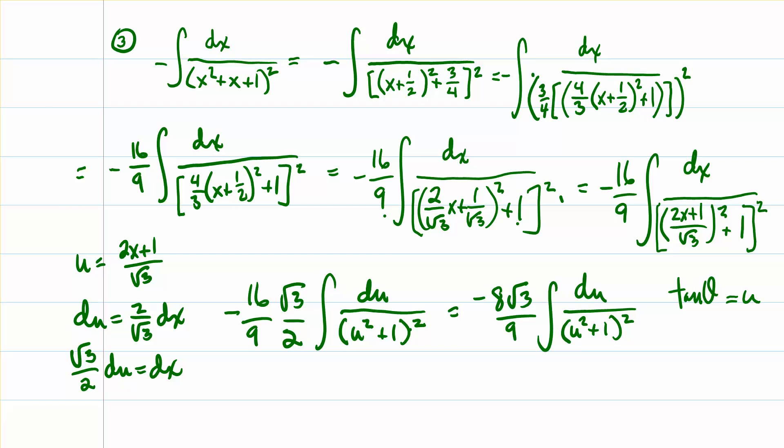We won't go into all the justification or the reasoning behind the trig substitution. The u² + 1 form is what we want to use the tan θ = u substitution for. Taking the differential of both sides, we also get that du is equal to sec² θ dθ. You can pause the video at any time to work out the algebra on your own to make sure you can follow each step.